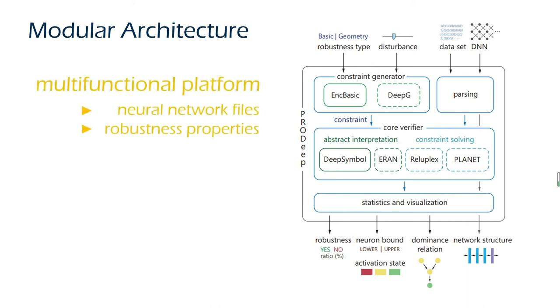PRODeep is a multifunctional platform. It can verify various robustness properties and can accept several forms of network files. The module design of PRODeep shows good scalability to network formats, robustness properties, and verification methods. It also grants great maintainability and reliability.